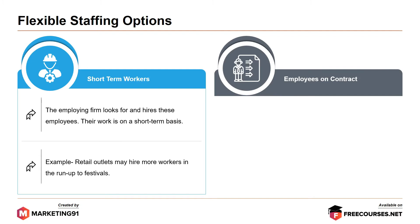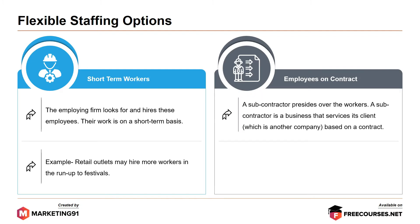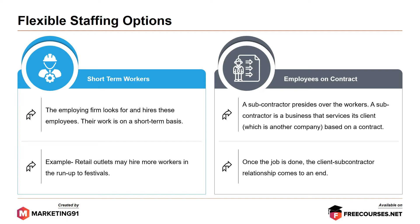The second option is Employees on Contract. A subcontractor presides over the workers. A subcontractor is a business that services its client — another company — based on a contract. Once the job is done, the client-subcontractor relationship comes to an end. The contractor's employees then leave the client's premises and switch to a new client's job. The subcontractor is responsible for the employees' salary, and these employees report to the subcontractor.